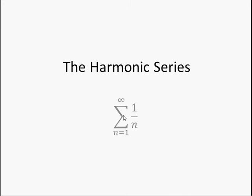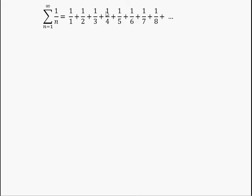It's the sum from 1 to infinity of 1 over n. So it looks like that: 1 plus 1 half plus 1 third plus 1 fourth plus 1 fifth plus 1 sixth plus 1 seventh, etc.